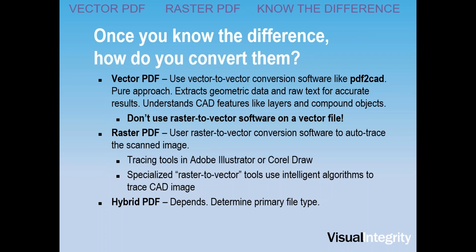With raster PDFs, use raster-to-vector conversion software to auto-trace the scanned image. For simple things like the shoe we saw, you can use the tracing tools in Adobe Illustrator or CorelDRAW to translate the scanned image into line art. For CAD drawings, especially more complex ones, there are specialized raster-to-vector tools which understand a lot about CAD drawings. You're lucky if you get 50 to 70 percent accuracy — it will require manual cleanup, but it's a trade-off versus redrawing the file from scratch.